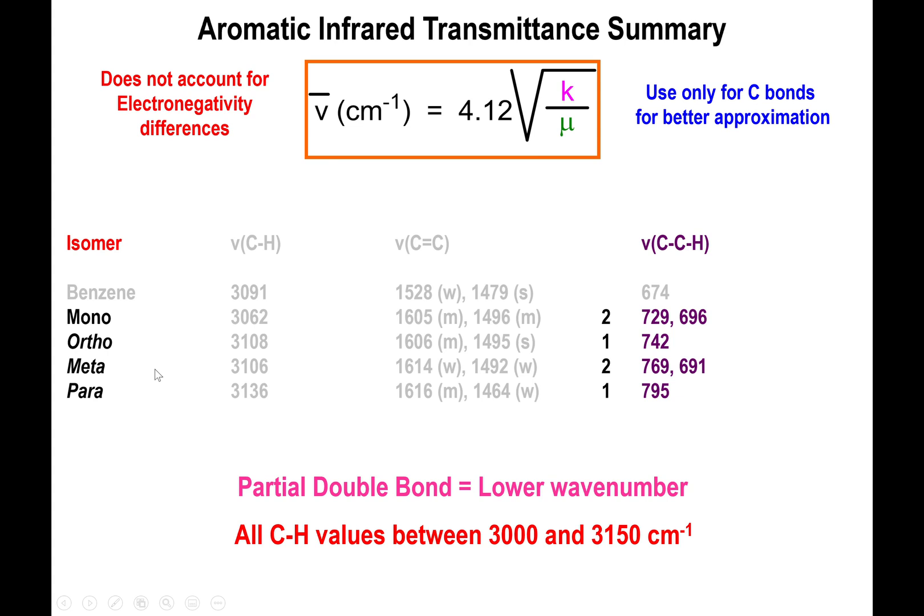If you have a meta substitution, which is to say that you are separated by one carbon or you have substituents in the 1,3 positions, you have two peaks. But now this time around the first one is higher in quantity, it's almost 770, and this one is still close to 700. That's your meta.